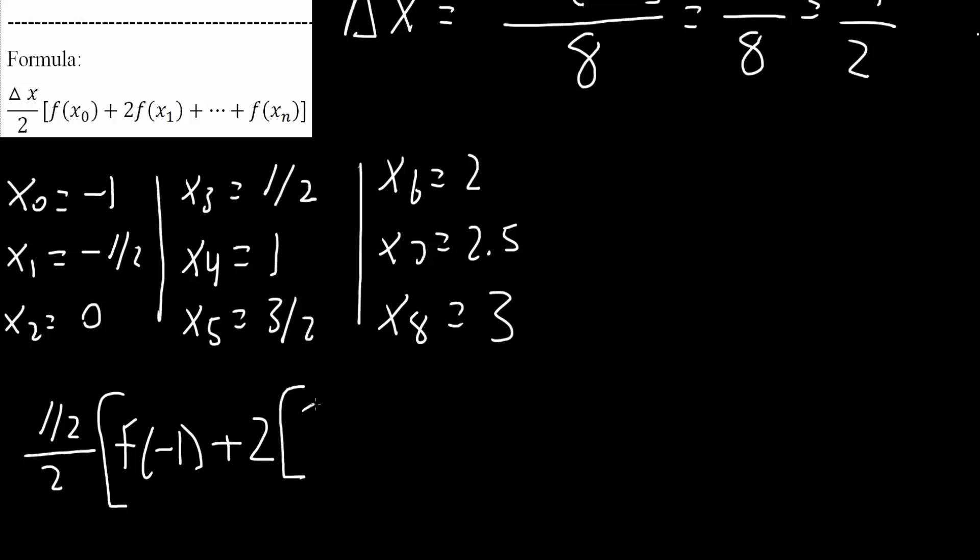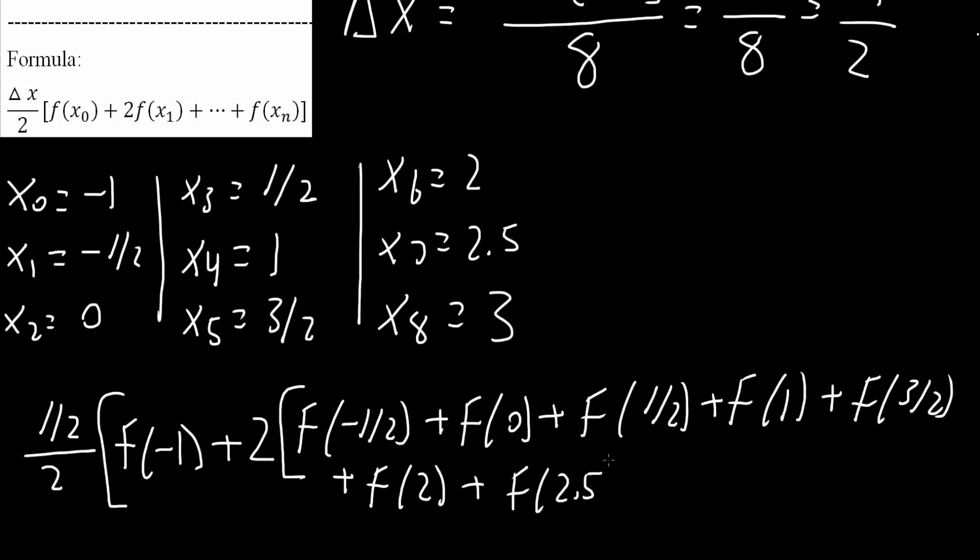Meaning, it will be f, parentheses, negative 1 half, plus f, parentheses, 0, plus f, parentheses, 1 half, plus f, parentheses, 1, plus f, parentheses, 3 halves, plus f, parentheses, 2, plus f, parentheses, 2.5. And this is where we stop.